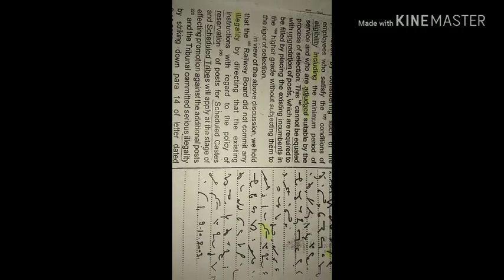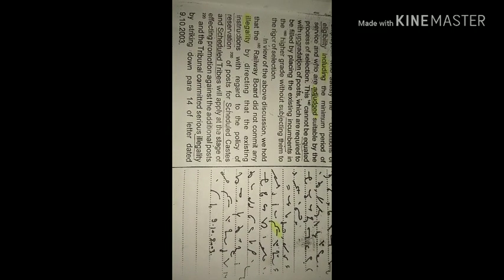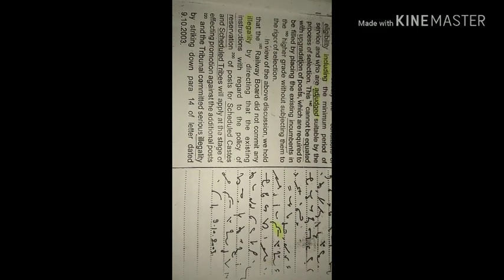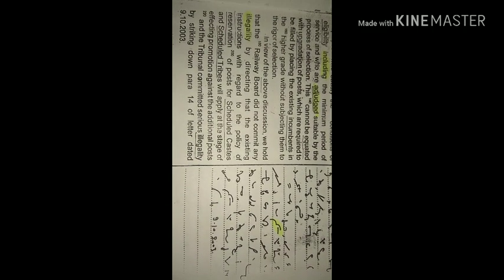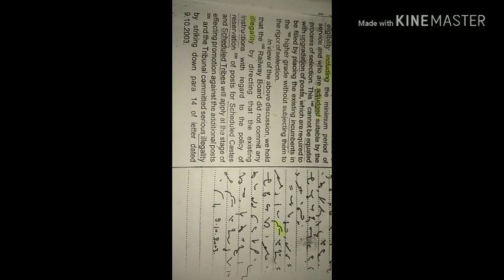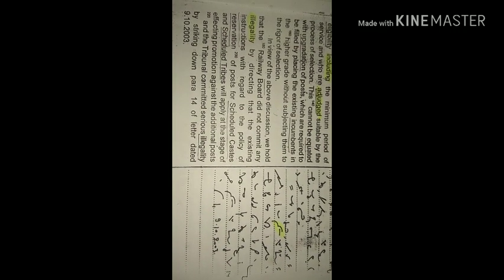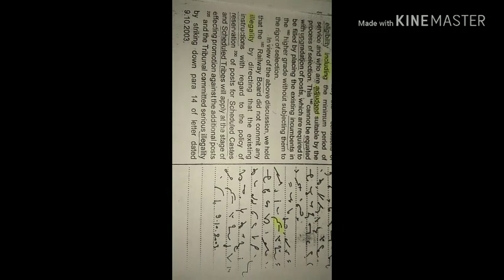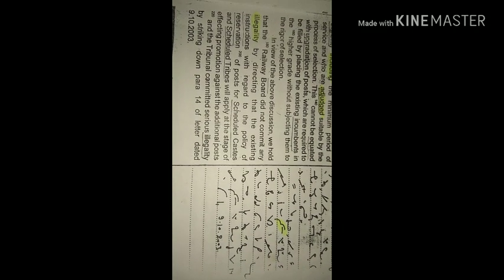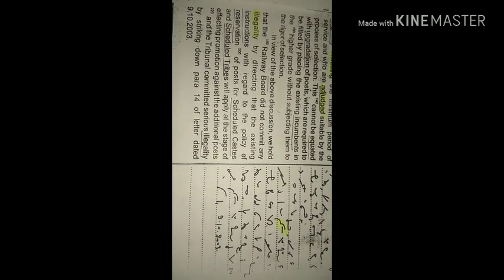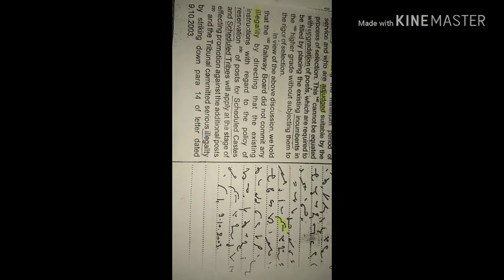In view of the above discussion, we hold that the Railway Board did not commit any illegality by directing that the existing instructions with regard to the policy of reservation of posts of scheduled castes and scheduled tribes will apply at the stage of effecting promotion against the additional posts and the tribunal committed serious illegality by striking down para 14 of letter dated 9-10-2003.